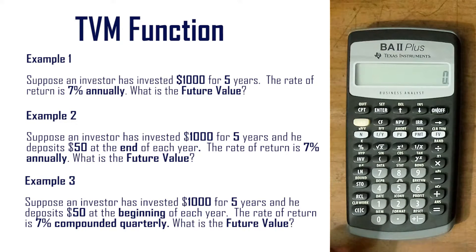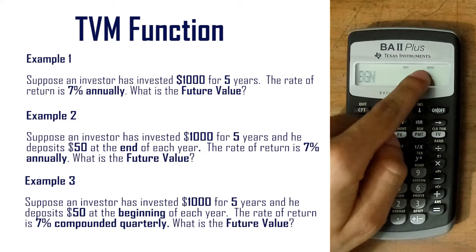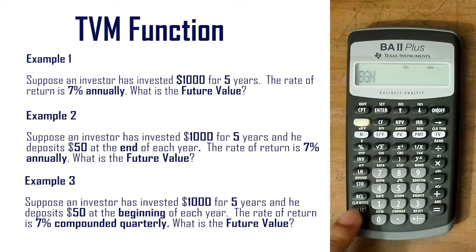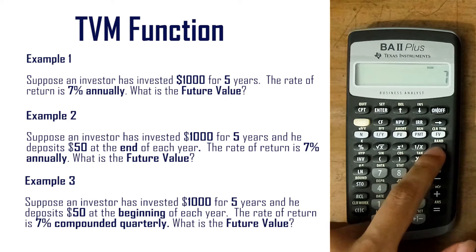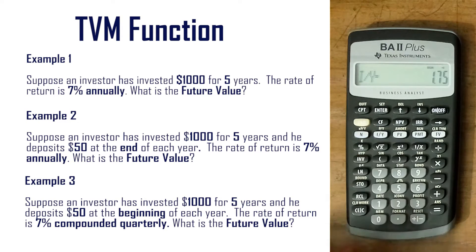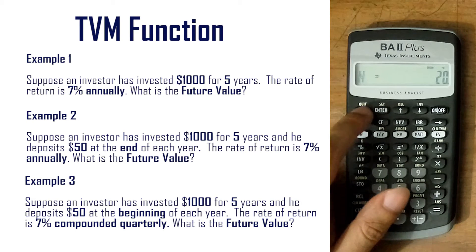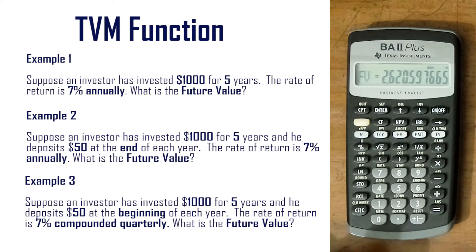In Example 3, there are two changes. First, he deposits $50 at the beginning of each year, so we switch to beginning mode by pressing 2nd PMT and then 2nd ENTER. Second, the 7% interest rate is compounded quarterly, so we divide 7 by 4 and enter 1.75 into i/y, and set n to 5 multiplied by 4, which is 20. The result is 2620.59.